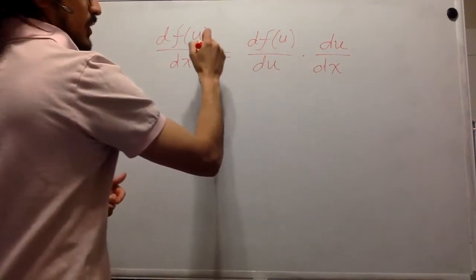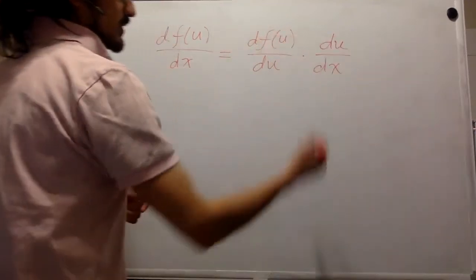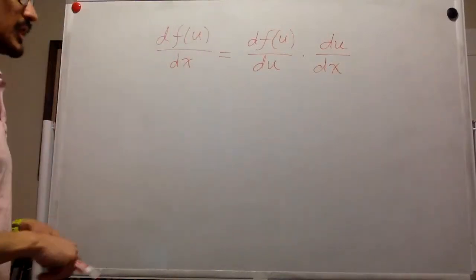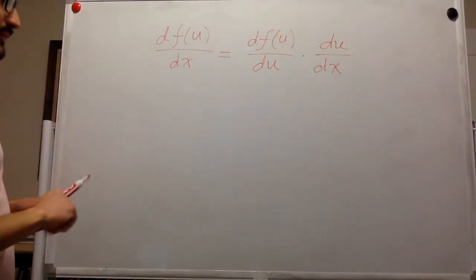You can actually, if you have more variables, continue expanding this. And it looks like a chain, right? So it's kind of cool. So it's called the chain rule.